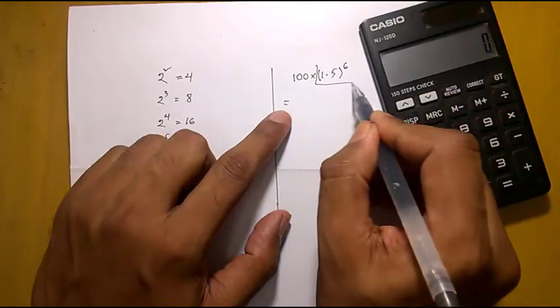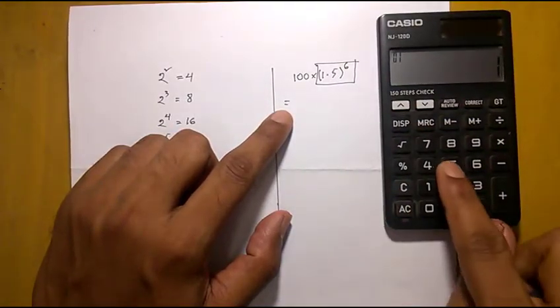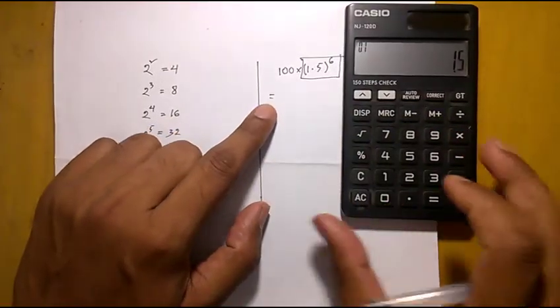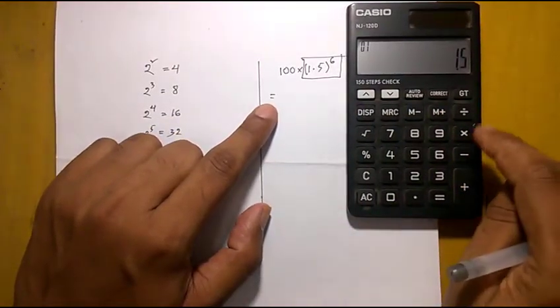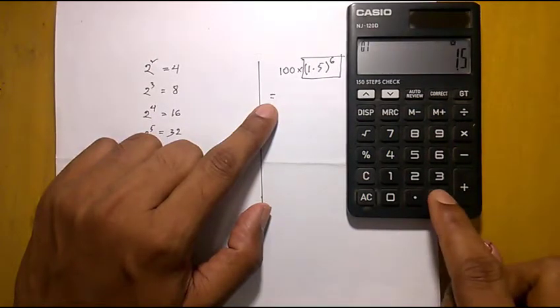Here we have to first solve this. 2 to the power 6. So press 2, then this multiplication sign. This is square, cube, to the power 4, to the power 5, to the power 6.